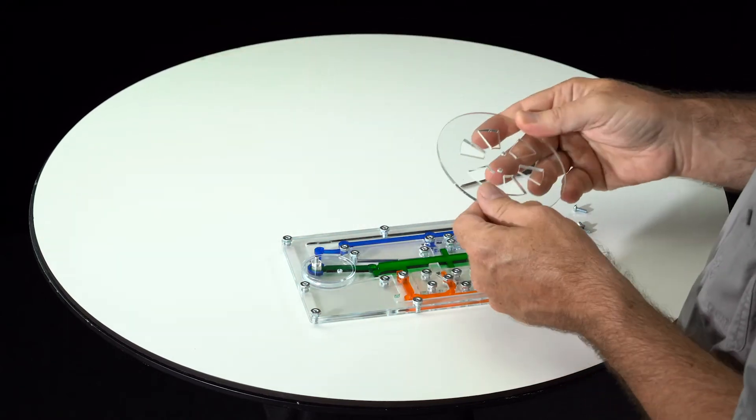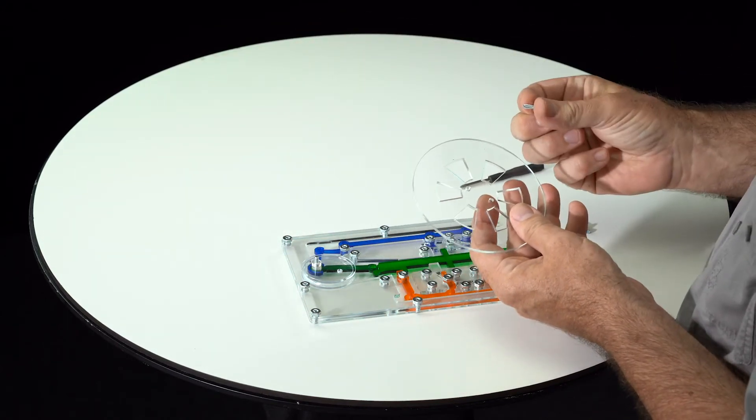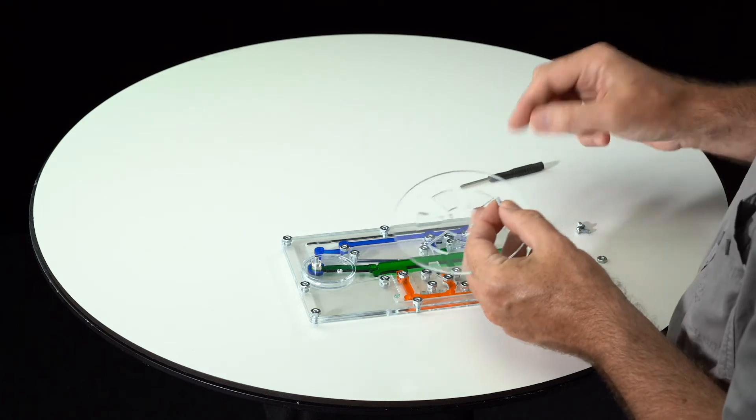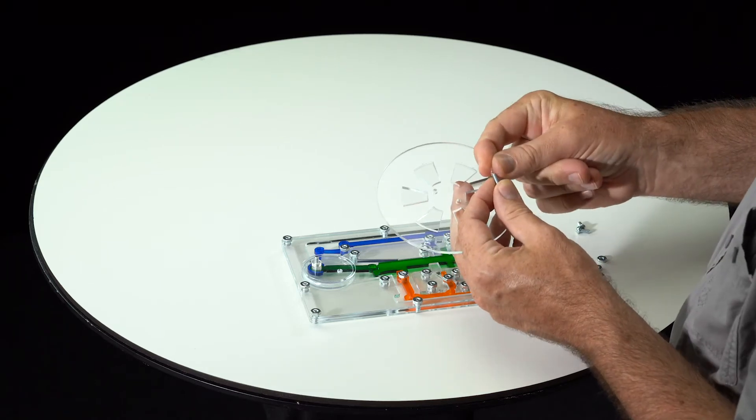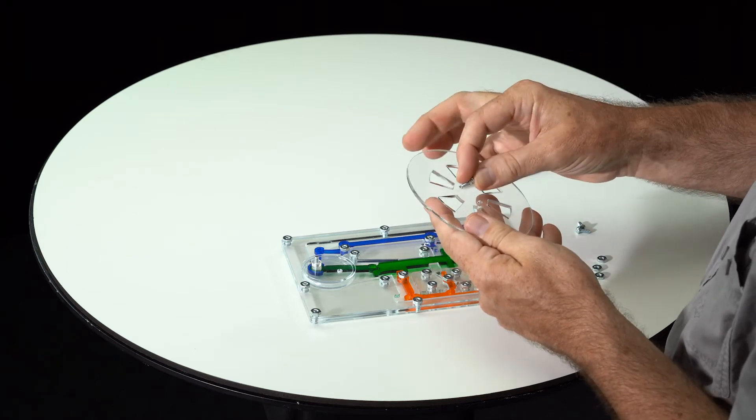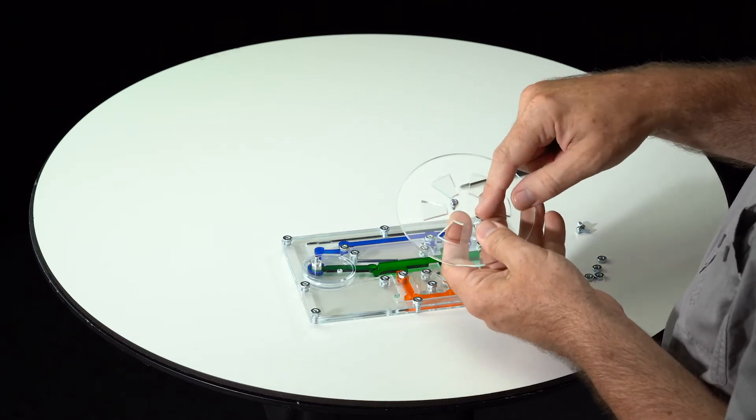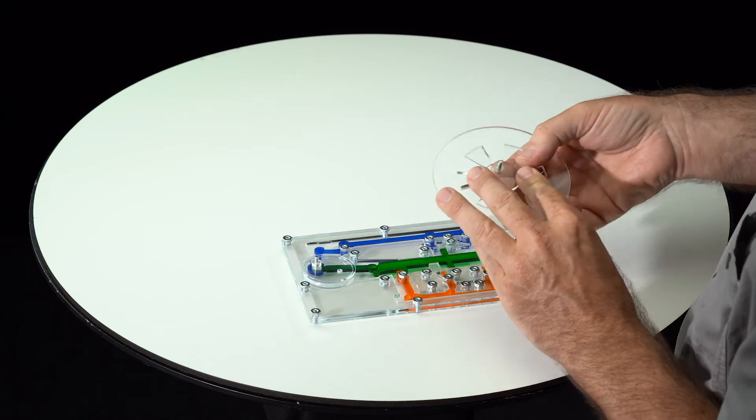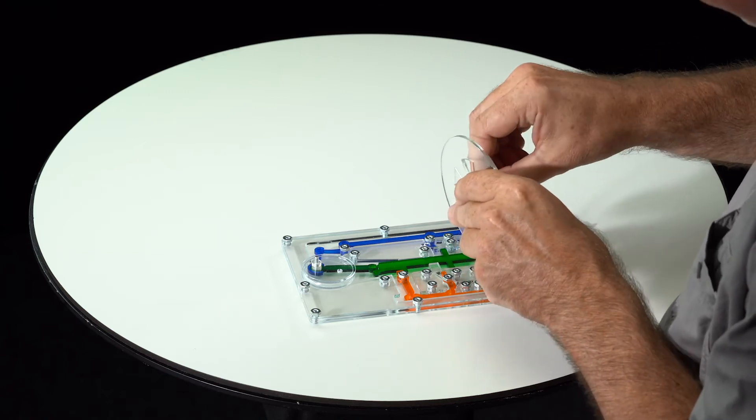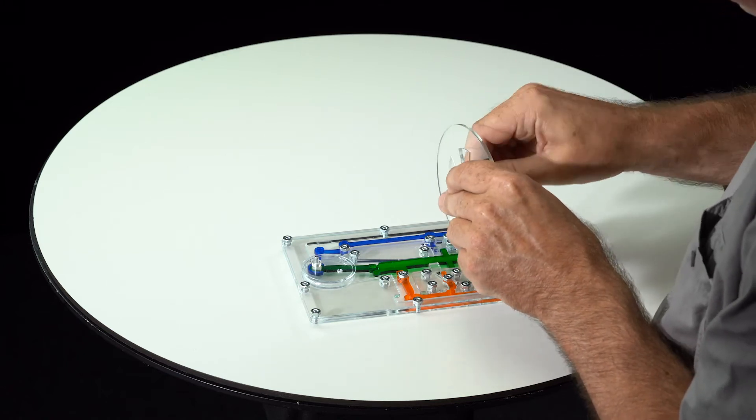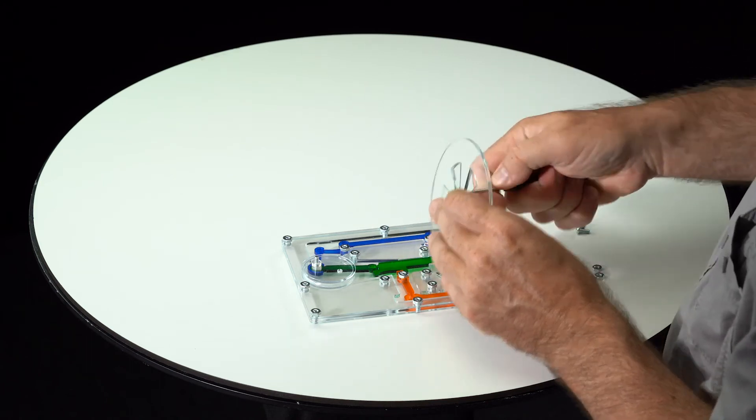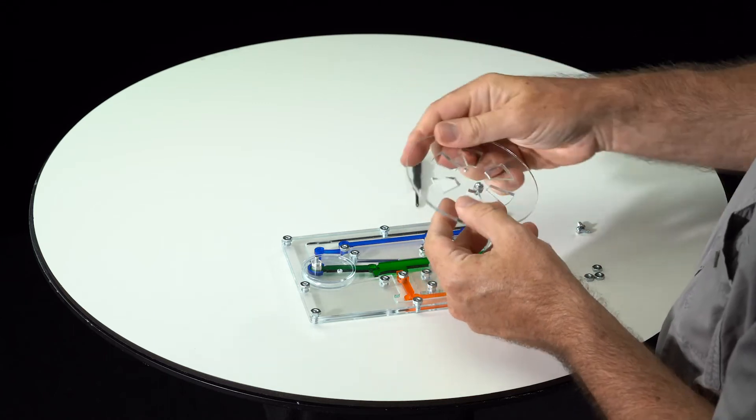Now before we attach the flywheel, we need to take one of these screws, one of the remaining short screws, and you may or may not need this washer on here, but I put it on there anyway. So it goes through one of the two holes, doesn't matter which one, sticks through. And we put a nut on it on this side. And put it on and then tighten the nut. This is just forming a little peg here.